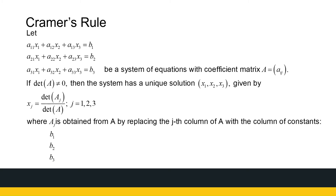For a system of three equations and three unknowns — and this can be expanded to bigger systems — if I've got the coefficient matrix A, and if the determinant of A is non-zero, there are two things attached to this. Firstly, my coefficient matrix has to be square, so I need the same number of equations as unknowns, and then the determinant of that coefficient matrix must be non-zero. Then I can find X1, X2, X3 as follows.